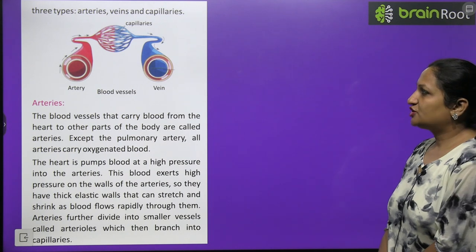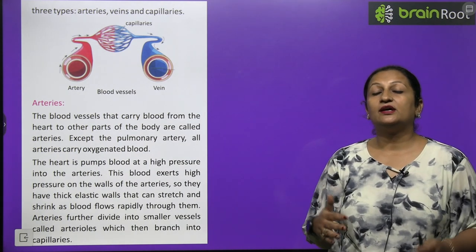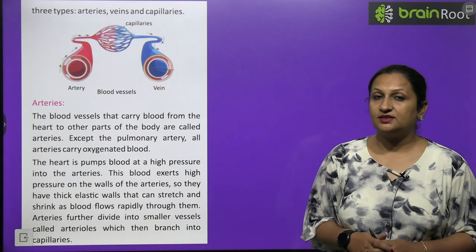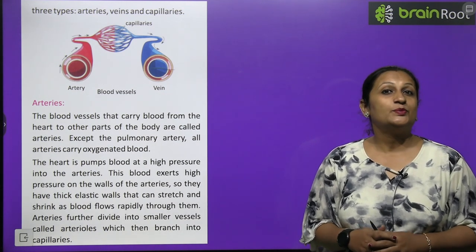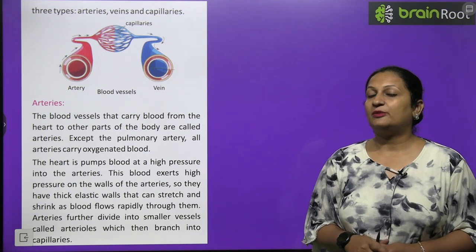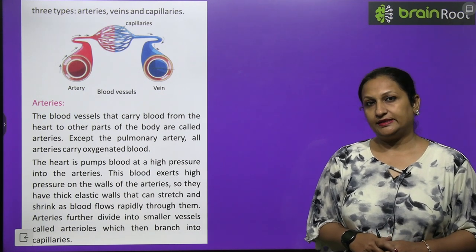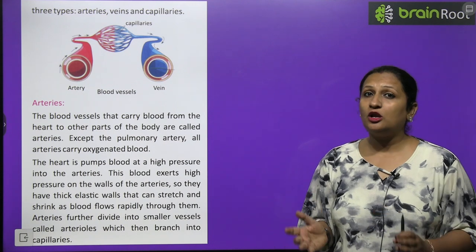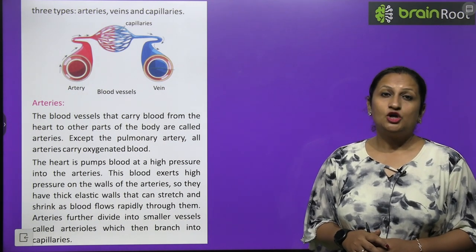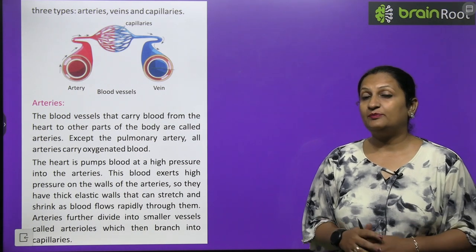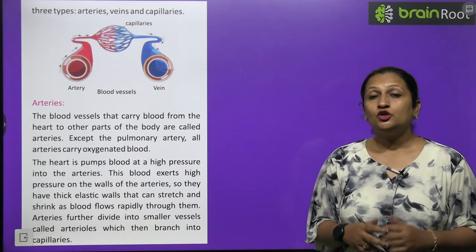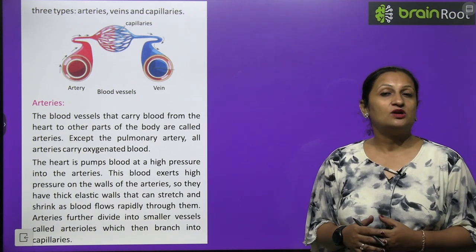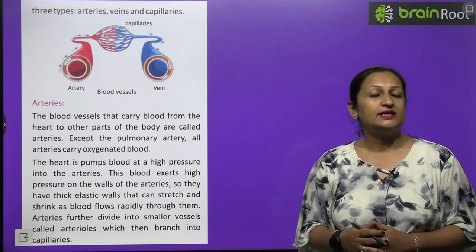Arteries carry blood away from the heart to all organs of the body. Arteries carry oxygenated blood, except one artery called the pulmonary artery, which carries deoxygenated blood. Because blood is pumped directly from the heart into arteries at high pressure, the blood flows very rapidly. This is why the walls of arteries are very thick, and their lumen is quite broad so that blood can flow easily through them.